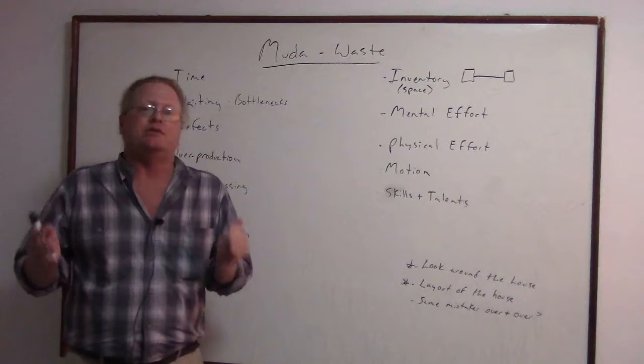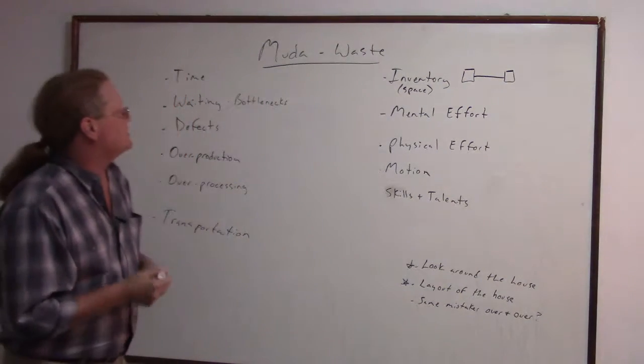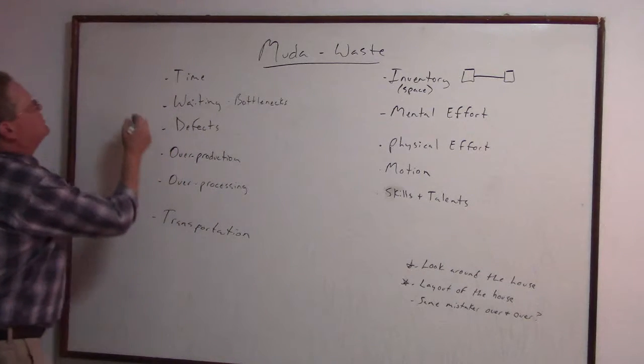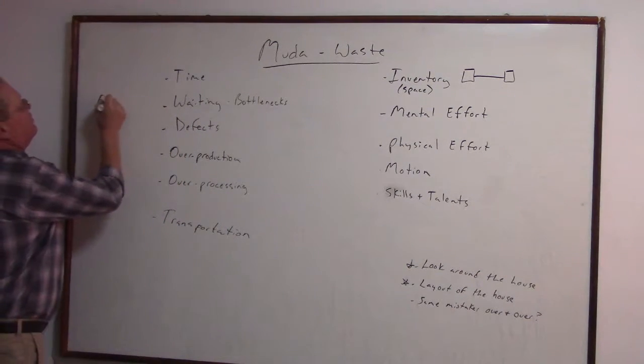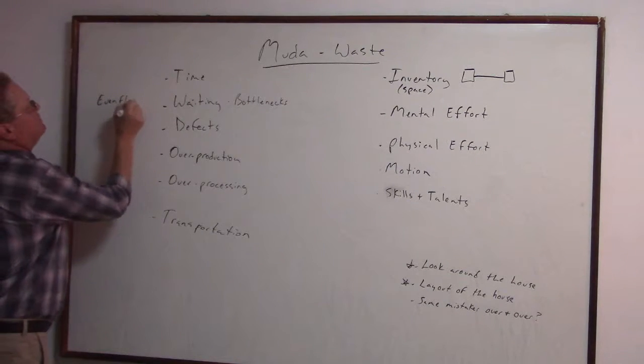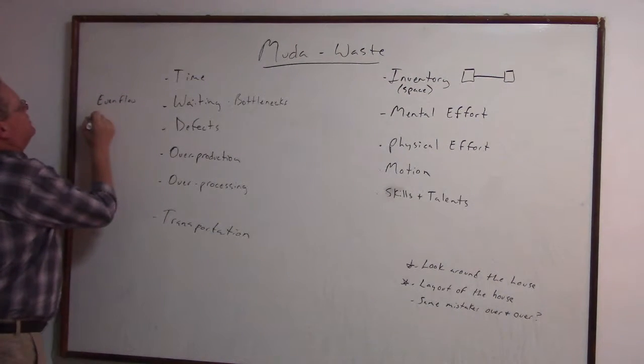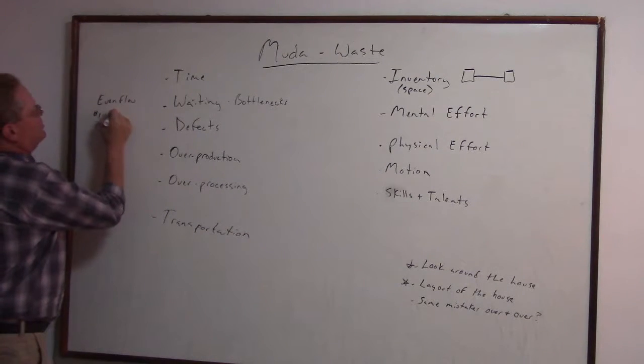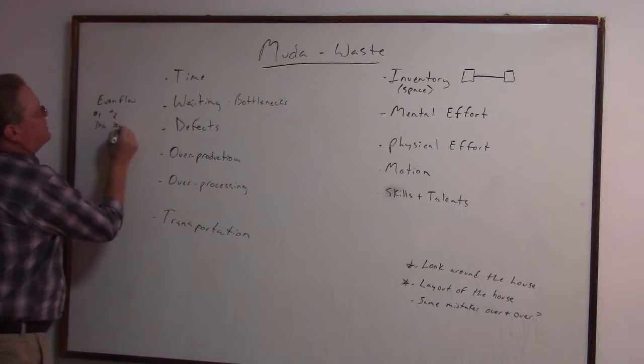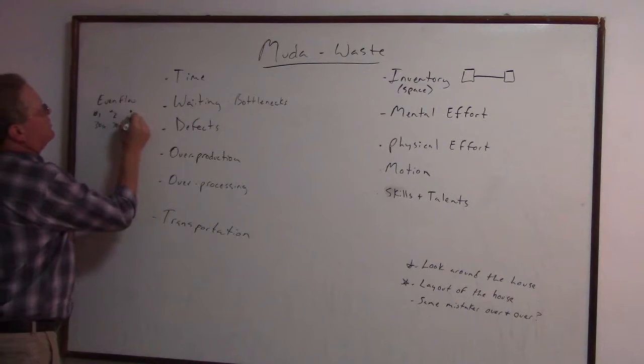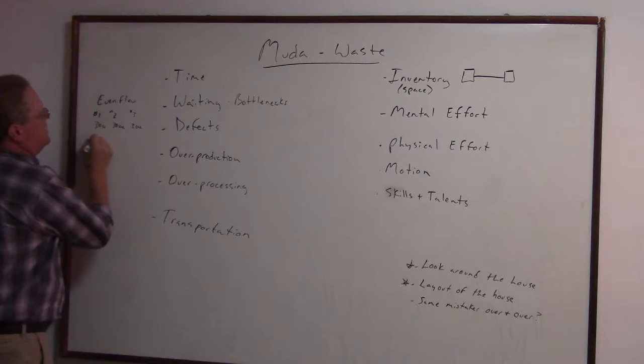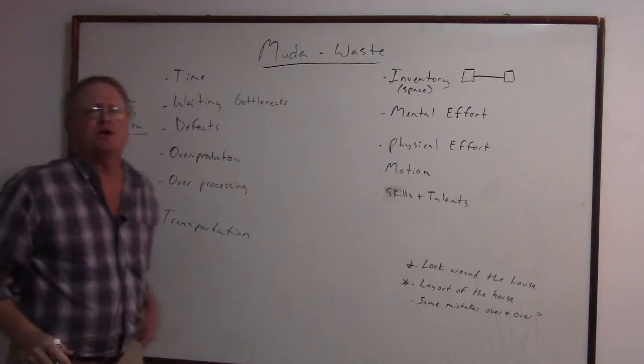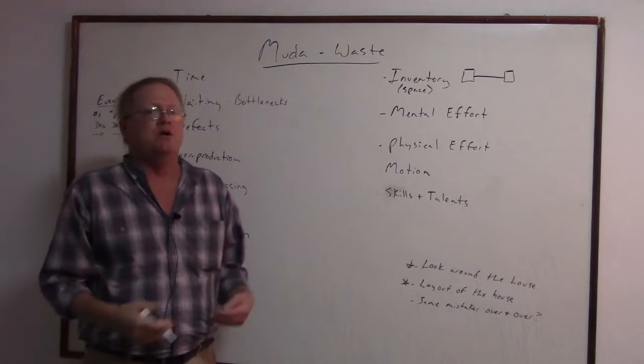There's no value being added to it. It's just sitting there. And actually, going back to SEM 210, if we are in a situation of a factory, we want even flow, which means process number one takes 30 seconds, and then number two would take 30 seconds, not a minute, and then number three would take 30 seconds. So then we have even flow throughout the building and the product parts aren't waiting around.